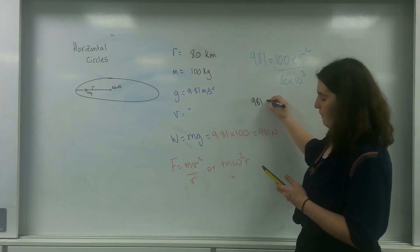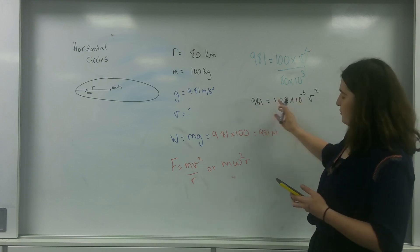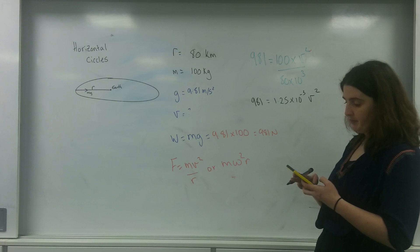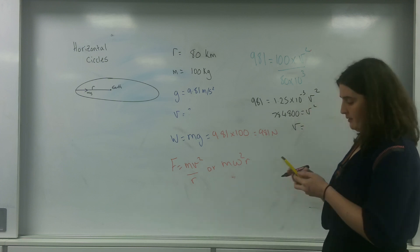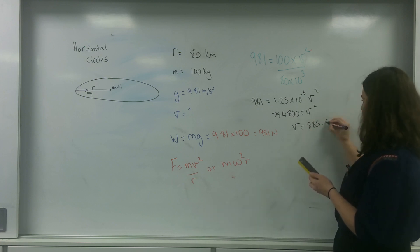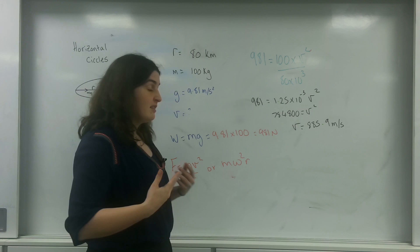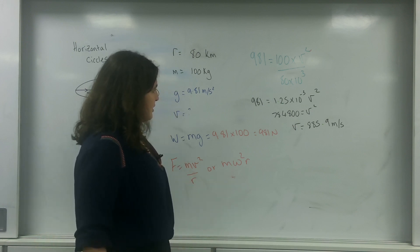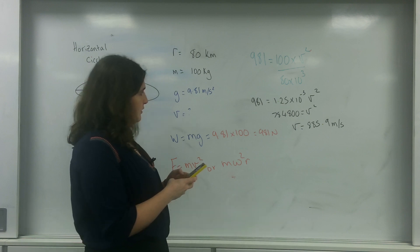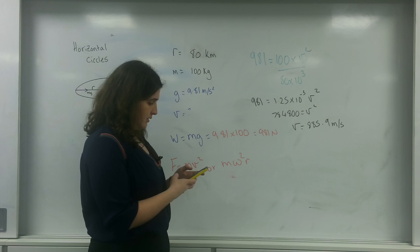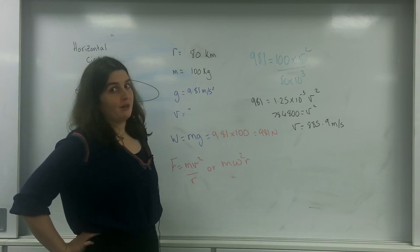So 981 equals 1.25 times 10 to the minus 3 times v squared. Dividing 981 by that gives 784,800 equals v squared. My velocity would be the square root of that, which is 885.9 metres per second. That does seem fast, but it's not really that fast at all in the grand scheme of space travel. So this is the speed of the satellite going around in this theoretical horizontal circle.